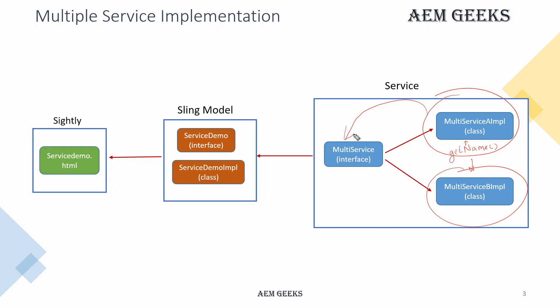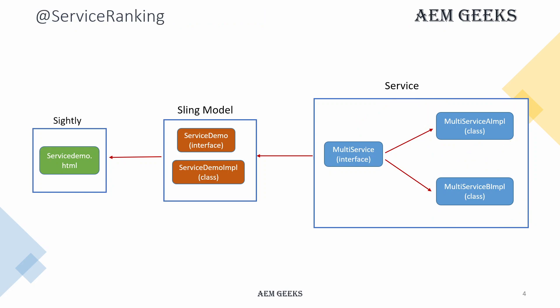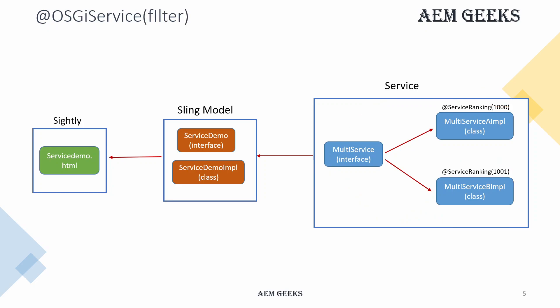Suppose I want a particular implementation class to be invoked — say the getName() method from implementation class B. In that case we can define ranking using the @ServiceRanking annotation. Whichever service has the higher ranking will be called. So if implementation B has higher service ranking, that class's method will be called. Even if I change the service ranking of the other one to, say, three, then that one will be called instead.